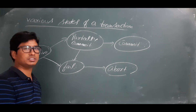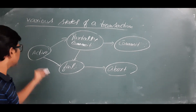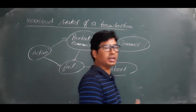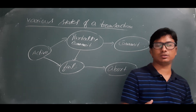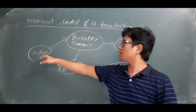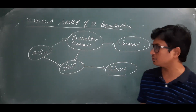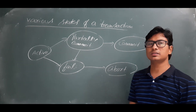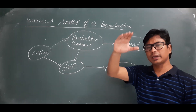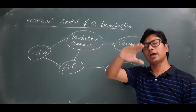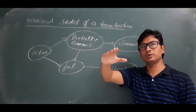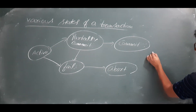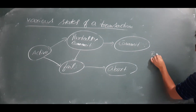These are the five states a transaction can be in. The active state is the initial state — when the transaction is executing, we call it the active state. Now, what is partially committed? You have read some value, modified the value, and written the value.